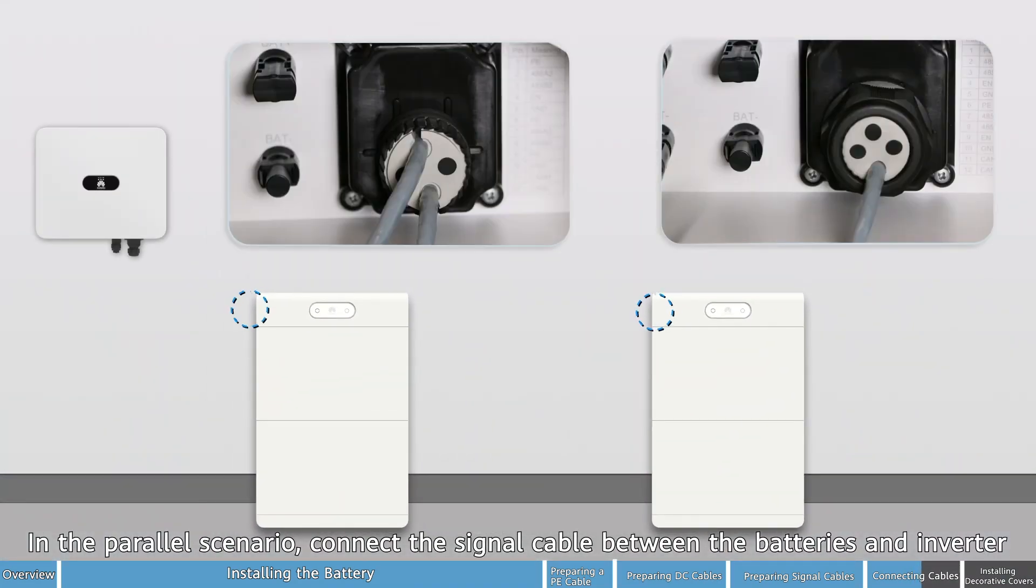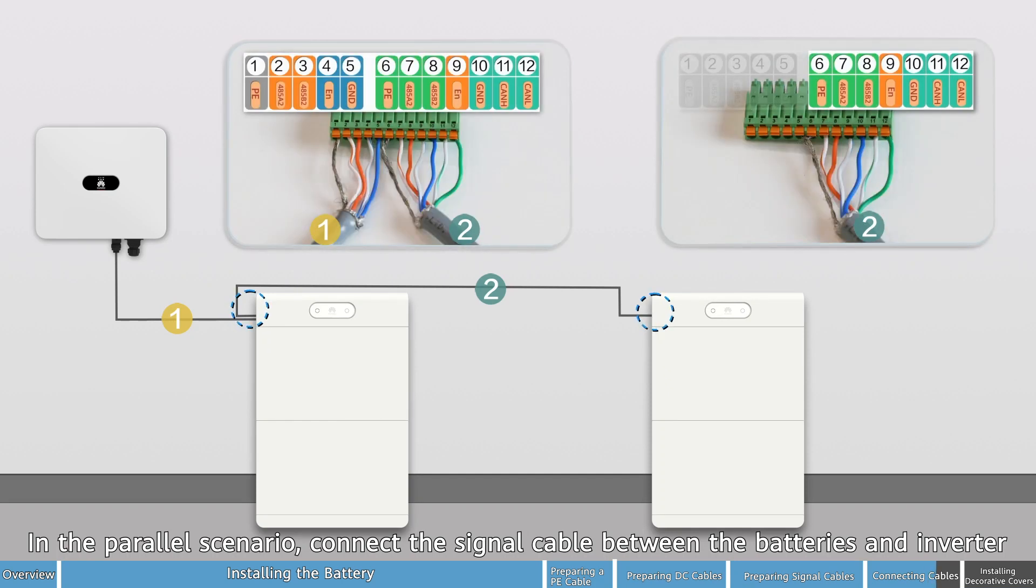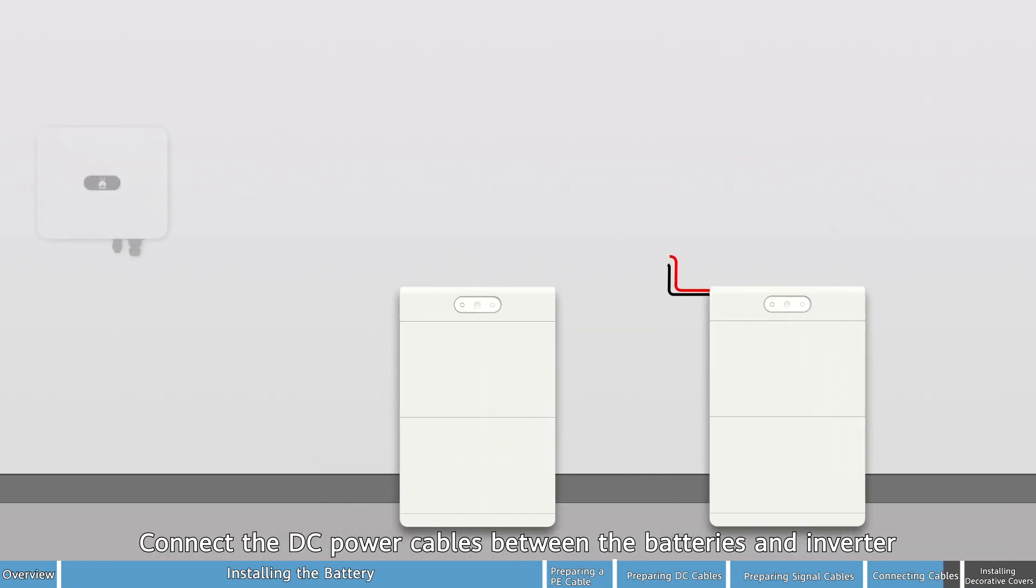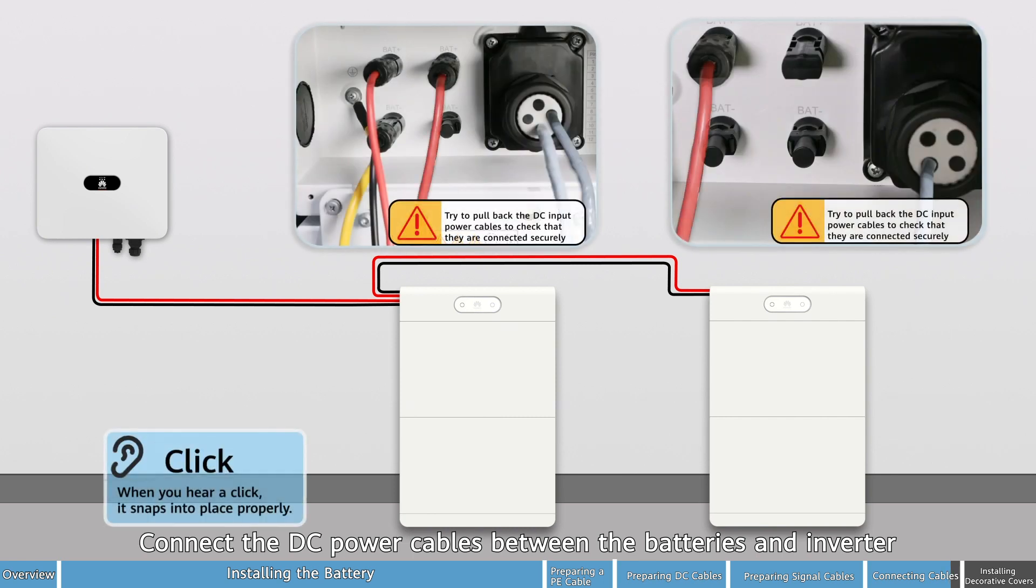In the parallel scenario, connect the signal cable between the batteries and inverter. Connect the DC power cables between the batteries and inverter.